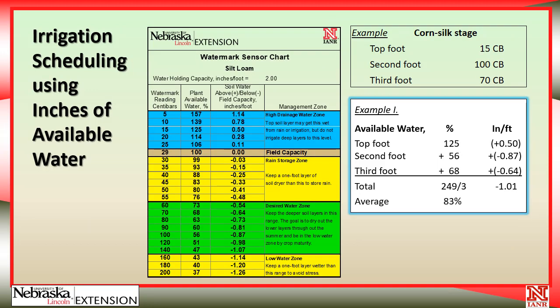A disadvantage is that it does require some calculations and a little bit more time. Let's take a look through an example of how we would use this column in the chart. We've put together a scenario — the same one we've been using in the other videos — where we've got corn at the silking stage, the top foot reading is 15 centibars, the second is 100, and the third is 70.